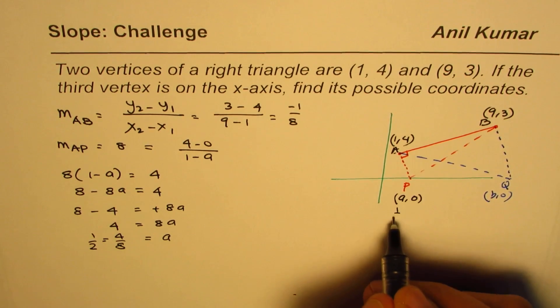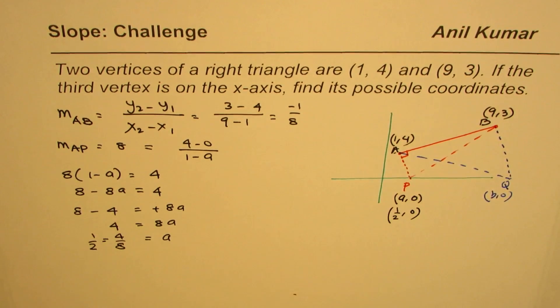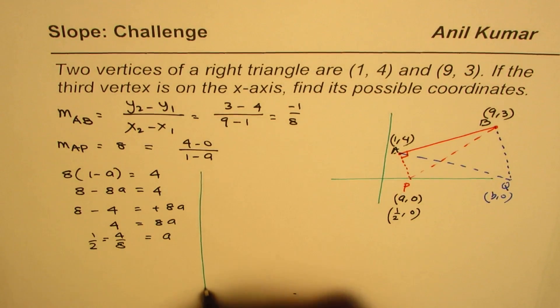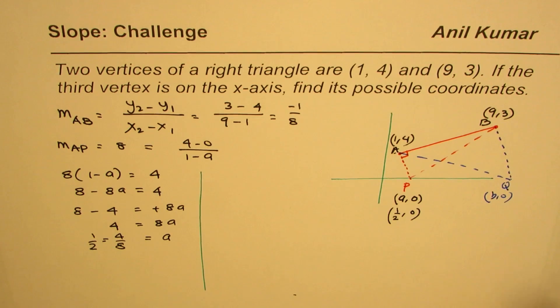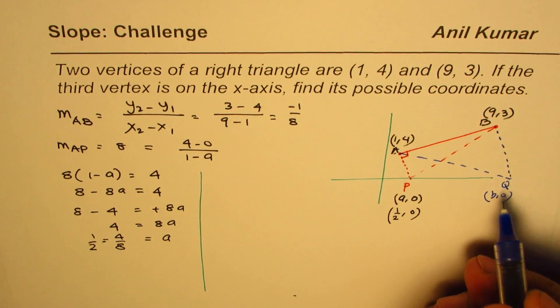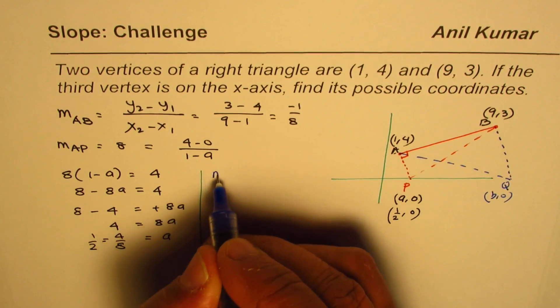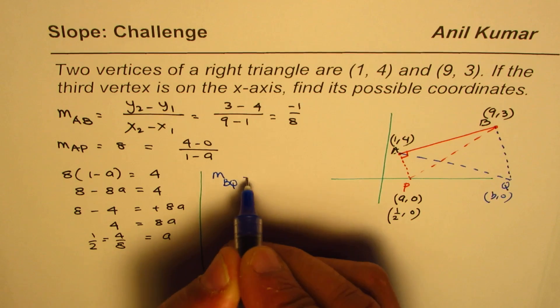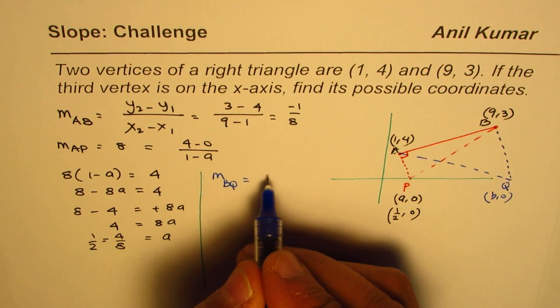Now let's find the second solution also. Second solution is with point Q. In that case, slope of BQ should be negative reciprocal of this, which is 8.